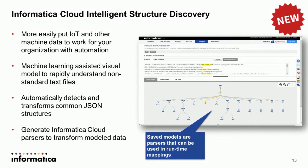The next enhancement is around Intelligent Structure Discovery, which automatically identifies data structures. For example, if you have IoT data or machine sensor data coming in as log files, you often don't know what the structure looks like. Structure Discovery uses heuristic algorithms in the back-end to analyze the input file and automatically identify the semantic structures, making it very easy to parse data, extract the appropriate information, and forward it to the right consumers.